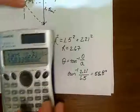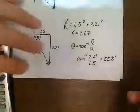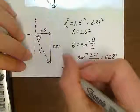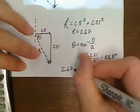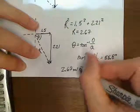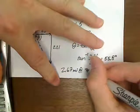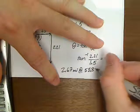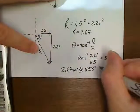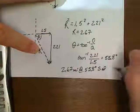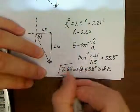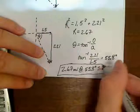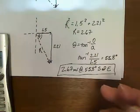Now, if I want to put this in true vector notation, I would come back and say my final solution is 2.67 miles at 55.8 degrees south of east. This would be my final solution to that problem.